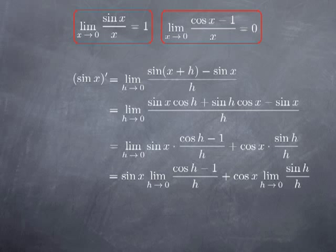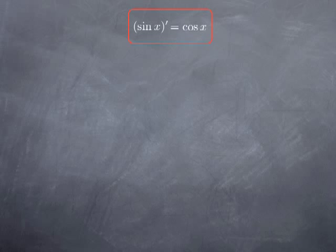And we obtain this expression: sin x multiplied by the limit at 0 of (cos h minus 1) over h, which we know is 0, and therefore we obtain cos x. In other words, the derivative of sin x is cos x.